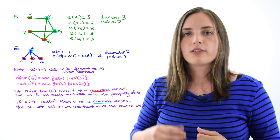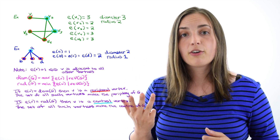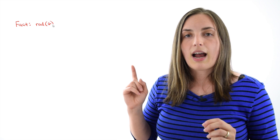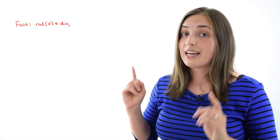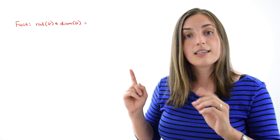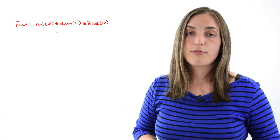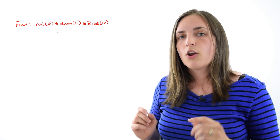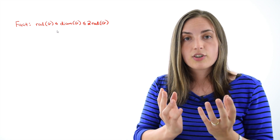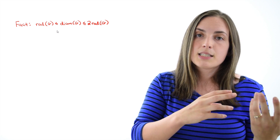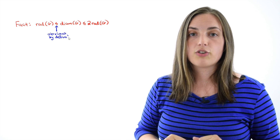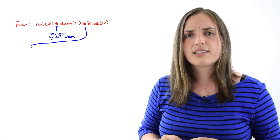We've learned a lot of new words: eccentricity, radius, diameter, periphery, and center. Let's conclude by proving a simple fact: the radius of a graph is less than or equal to the diameter, which is less than or equal to two times the radius. Remember, radius is the minimum over all eccentricities, and diameter is the maximum over all eccentricities, so the first inequality is clearly true. Let's now prove the second inequality.